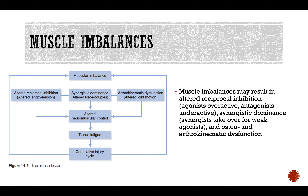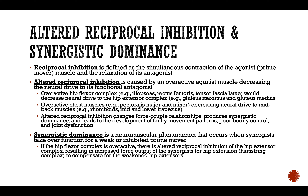Altered reciprocal inhibition involves the simultaneous contraction of an agonist and relaxation of its antagonist. When altered, the agonist is overactive and decreases the neural drive to its functional antagonist, causing that antagonist to become overactive when we don't want it to. This disrupts forced-couple relationships — where multiple muscles keep joint structures intact and prevent unwanted movements — leading to poor bodily control and joint dysfunction.